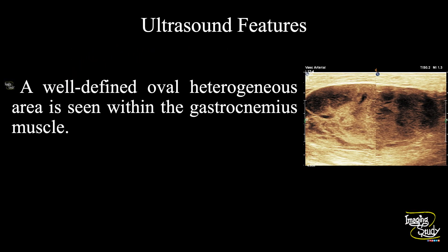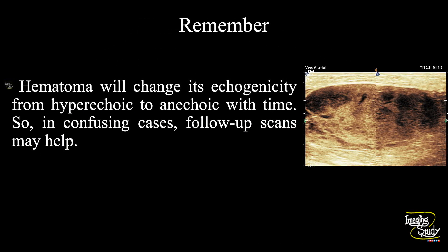In summary, a well-defined oval heterogeneous area is seen within the gastrocnemius muscle indicating cuff hematoma. The take-home message: hematoma will change its echogenicity from hyperechoic to anechoic with time. In confusing cases, follow-up scans may help.